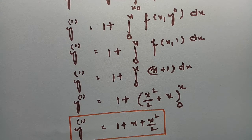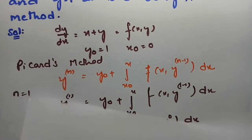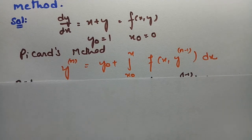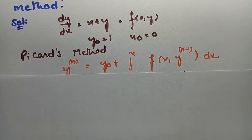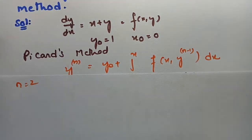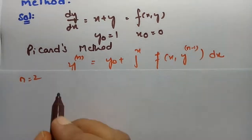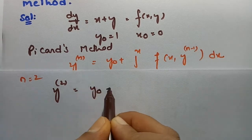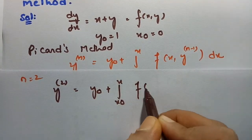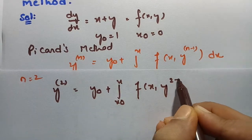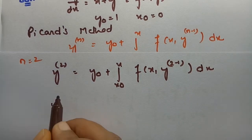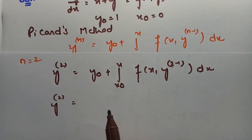Now we check with n = 2 for the second approximation. According to Picard's method formula, y₂ = y₀ + integral from x₀ to x of f(x, y₁) dx, where y₁ is the first approximation.